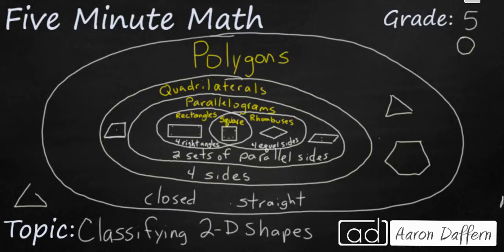A square is a rectangle because it has four right angles and a square is also a rhombus because it has four equal sides. But you see the square is also in this larger circle of a parallelogram.